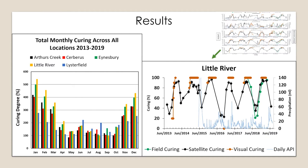All sites have similar patterns, so let's take a closer look at one of them. Satellite and field curing estimates are similar to each other, while visual curing estimates are higher than both of them, and precipitation has a negative correlation with curing.